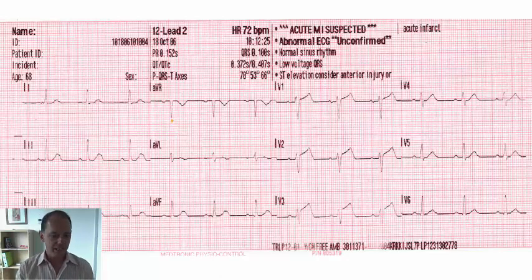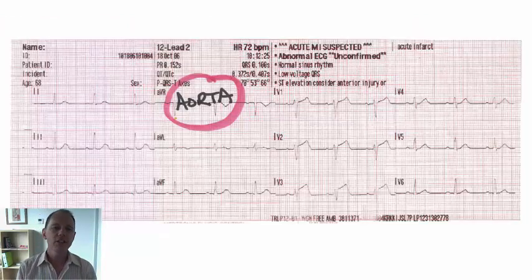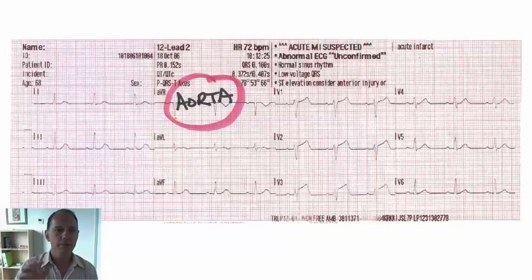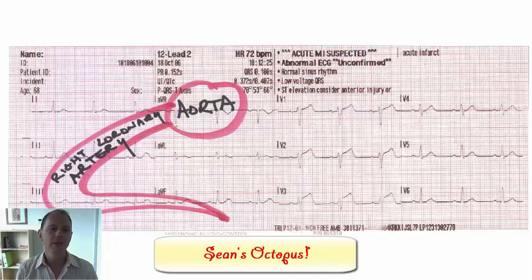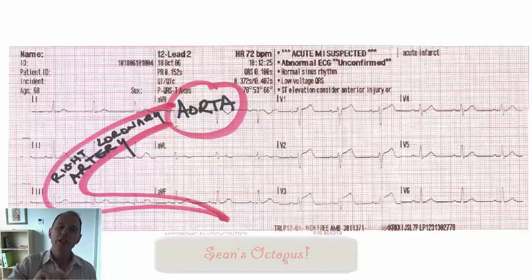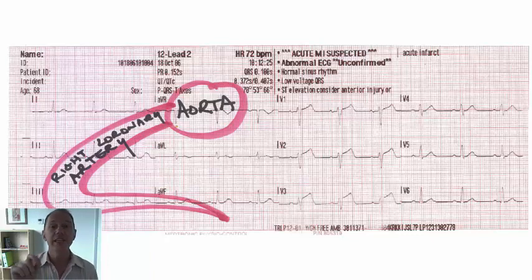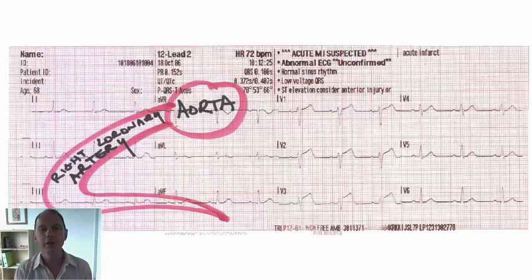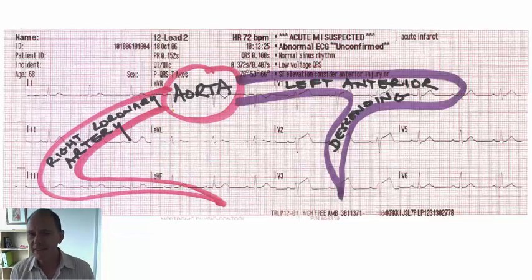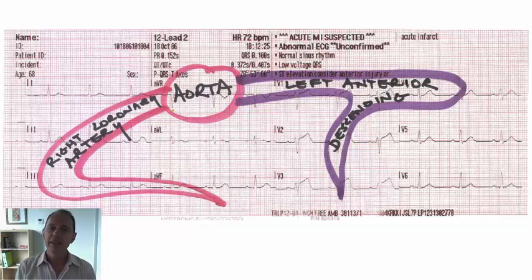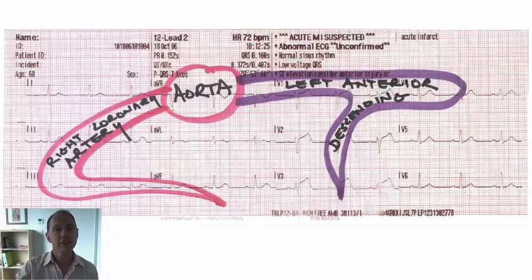So how do those arteries relate to the ECG? I've got a very useful little trick — let's place the aorta over AVR, and this is what I like to call Sean's Octopus. The right coronary artery comes off the aorta and feeds leads 2, 3, and AVF — and as you'll know, those are the inferior leads. The left anterior descending artery feeds leads V1, V2, V3, and V4 — so those septal and anterior portions of the heart are fed by the left anterior descending artery.